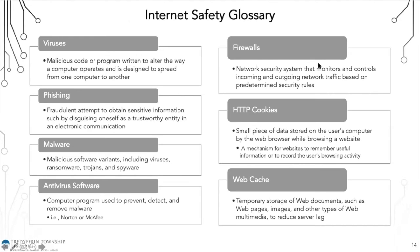Firewalls and antivirus software go hand in hand. A firewall is a network security system that monitors and controls incoming and outgoing network traffic based on predetermined security rules. Private Wi-Fi connections like the one at home will have a strong firewall to protect you. Public Wi-Fi connections have weaker firewalls because a strong firewall would make it harder for everyone to join freely.